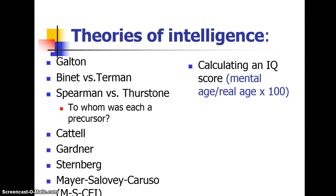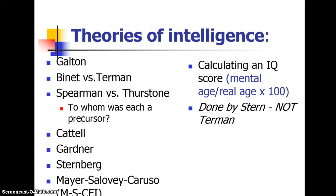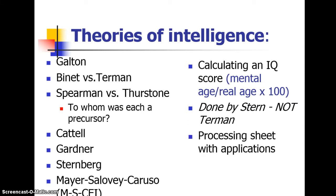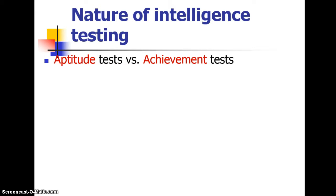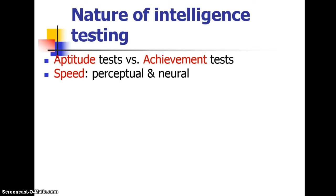Know how to calculate the IQ score, and note that this was done by Stern, not Terman — that runs together in your reading. The processing sheets are an enormous help in distinguishing among these. For intelligence testing, know the difference between aptitude tests — what you're capable of — and achievement tests — what you have achieved. The speed of intelligence includes processing speed, divided into perceptual speed, how fast you take it in, and neural speed, how fast the brain works once it gets there.